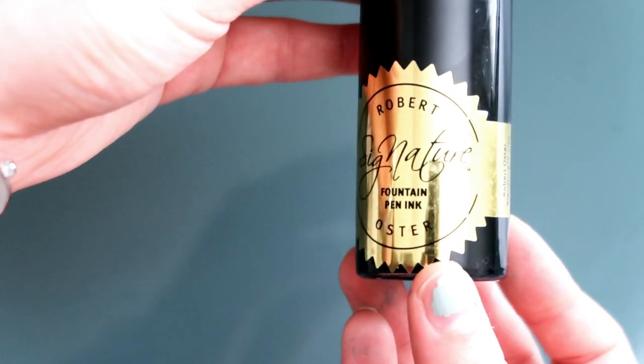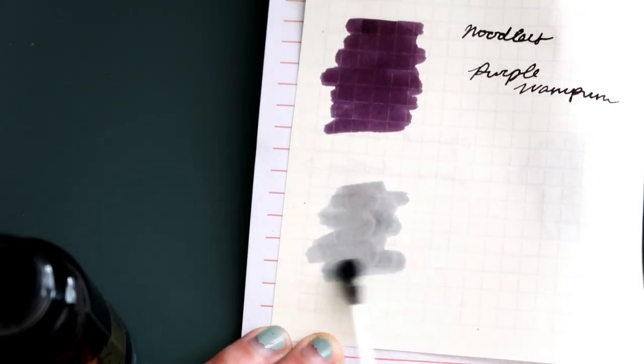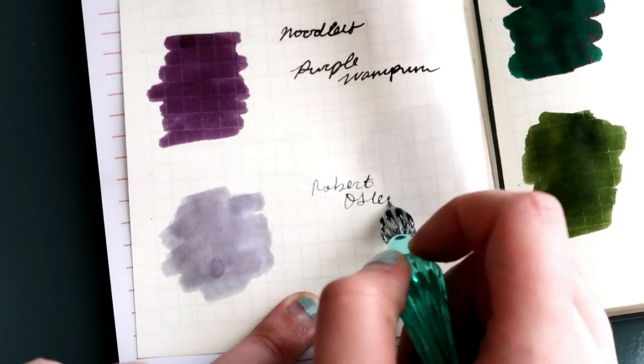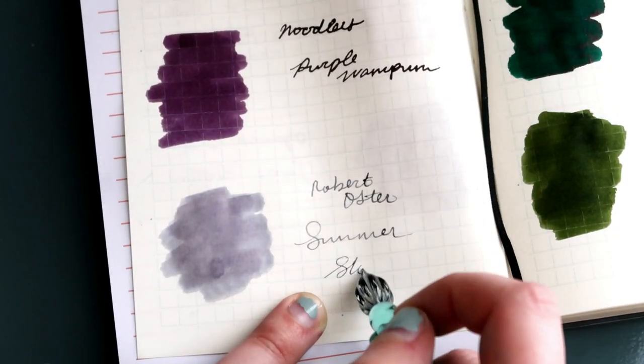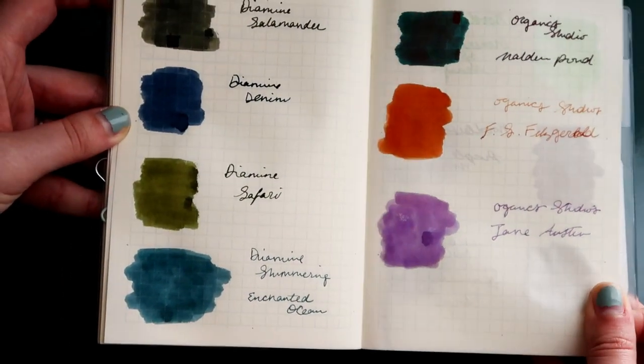Maybe I wasn't using the pen enough. And lastly is this Robert Oster ink in Summer Storm. It is this really pale gray purple. It's too light for me, actually. I thought it would be darker from the sample I saw in store, but it's lighter than I would prefer.